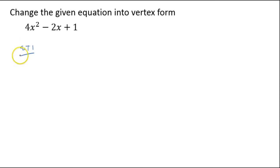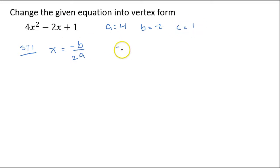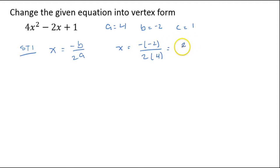Step 1 is to find our axis of symmetry, given by the equation x = -b / 2a. We plug in our values from standard form: a = 4, b = -2, and c = 1. So x = -(-2) / (2×4). A negative times a negative gives us a positive, and 2 times 4 is 8. We simplify to get 1/4. So my axis of symmetry is at x = 1/4.